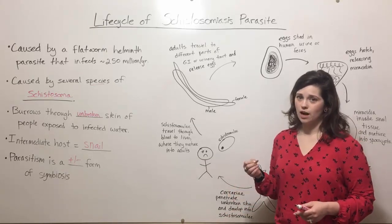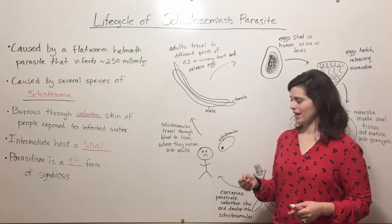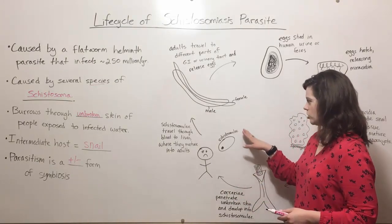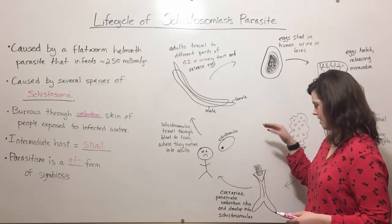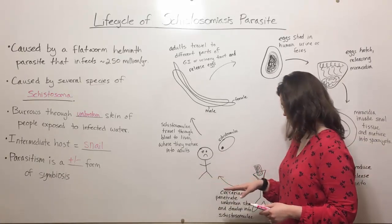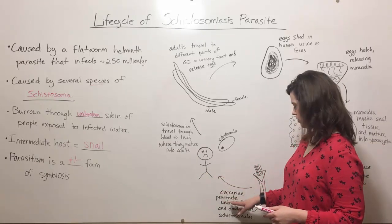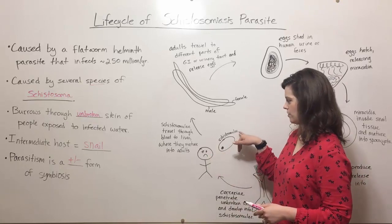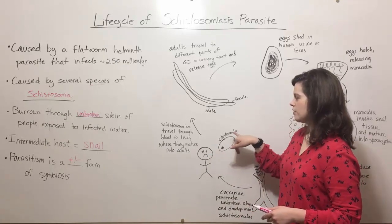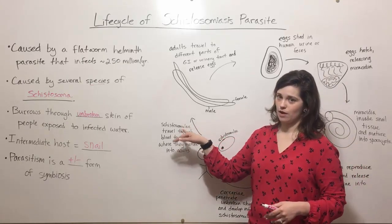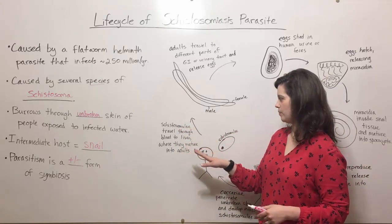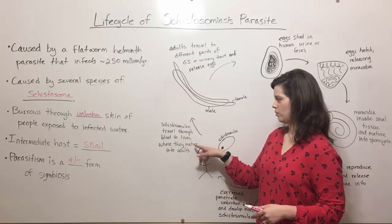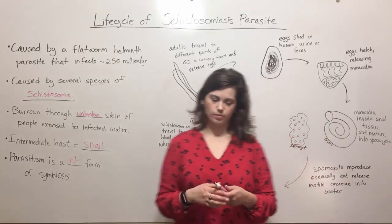You can see how incredibly complex this life cycle is with all of these different developmental stages. The cercariae penetrate unbroken skin, and once inside the human host, they develop into schistosomulae. The schistosomulae then travel through the host's bloodstream to the liver, where they mature into adult worms.